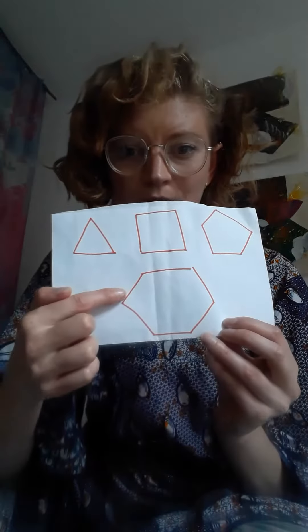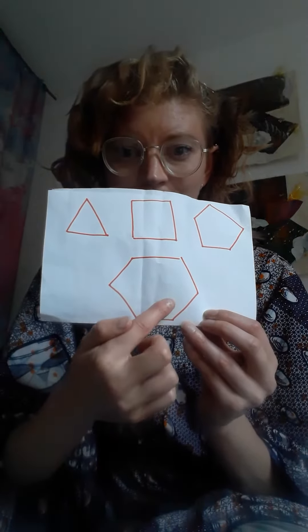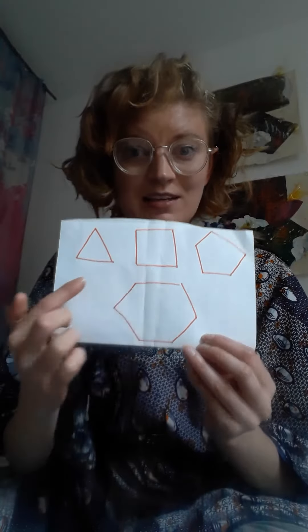How many sides does a hexagon have? Let's count: 1, 2, 3, 4, 5, 6. A hexagon has six sides. So how many sides does a pentagon have? 1, 2, 3, 4, 5. And how about a square? 1, 2, 3, 4. And how about a triangle? 1, 2, 3. How about a circle? There are no sides in a circle — and that's what makes it a circle.